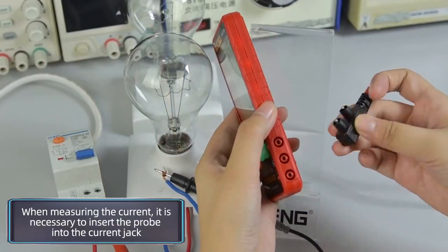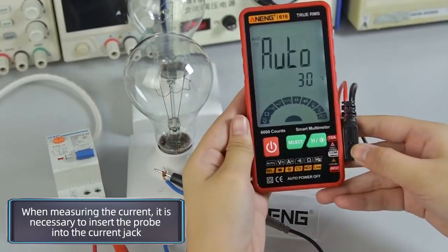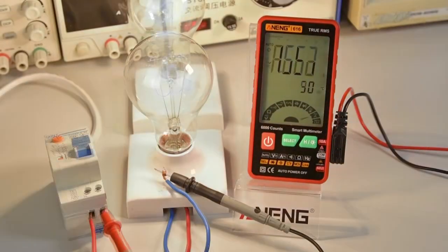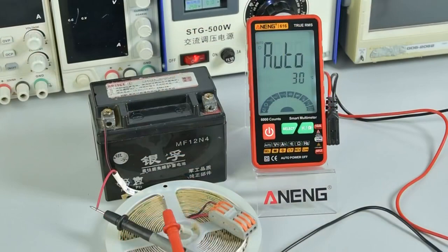AC current measurement. The test lead needs to be inserted into the 10A jack when measuring DC current.